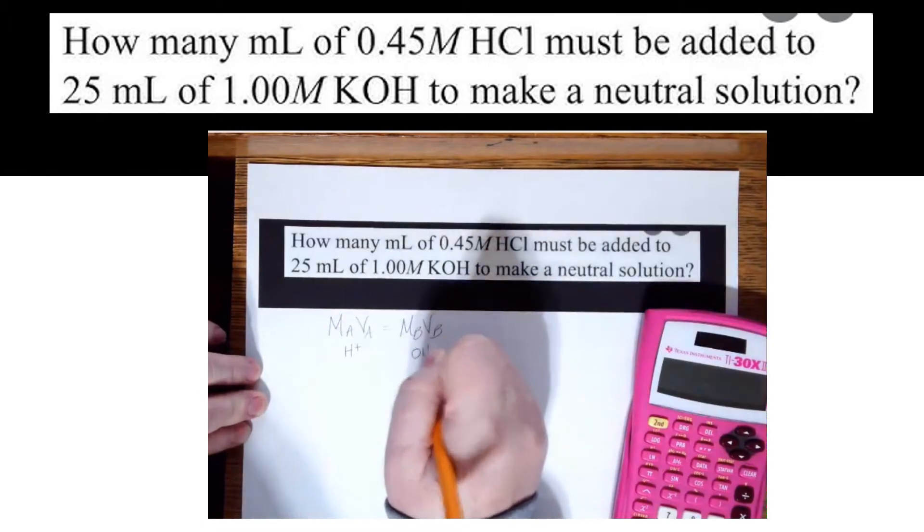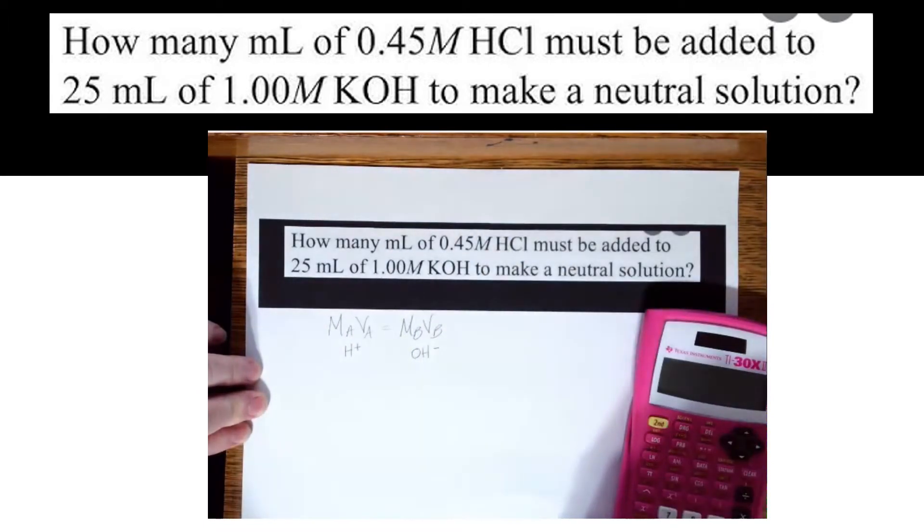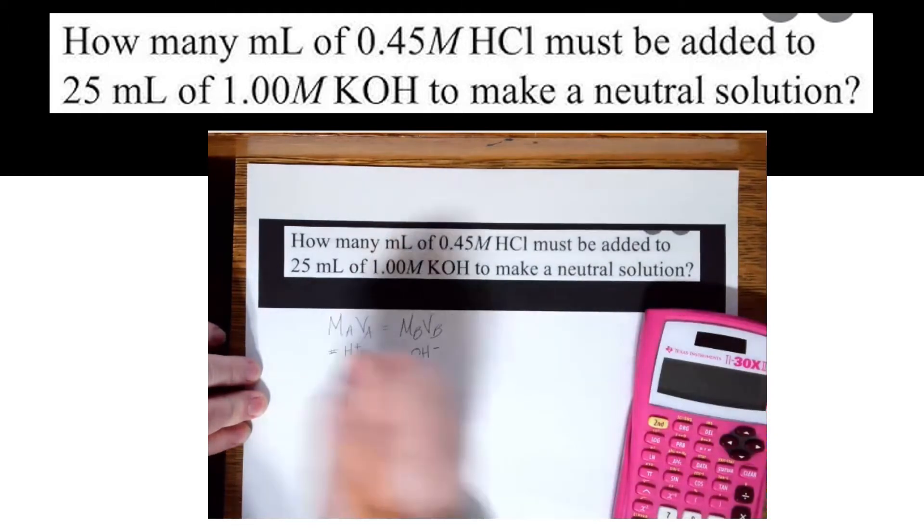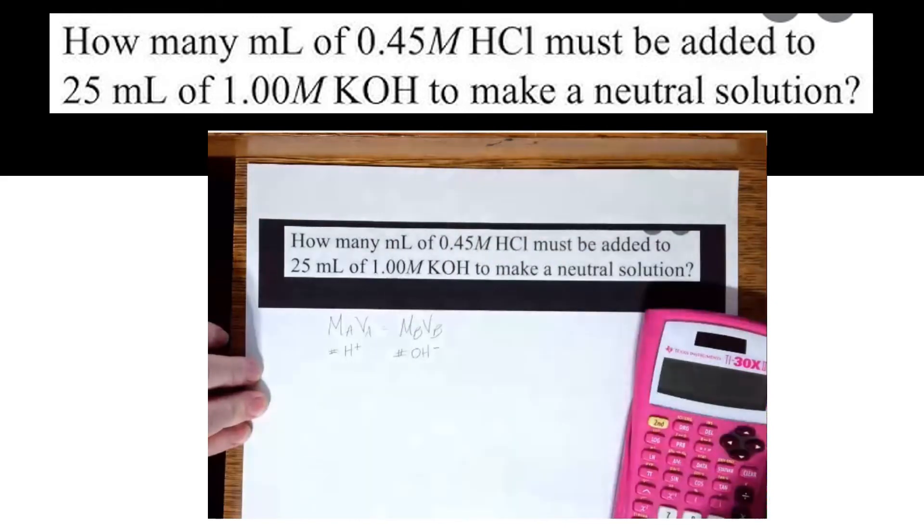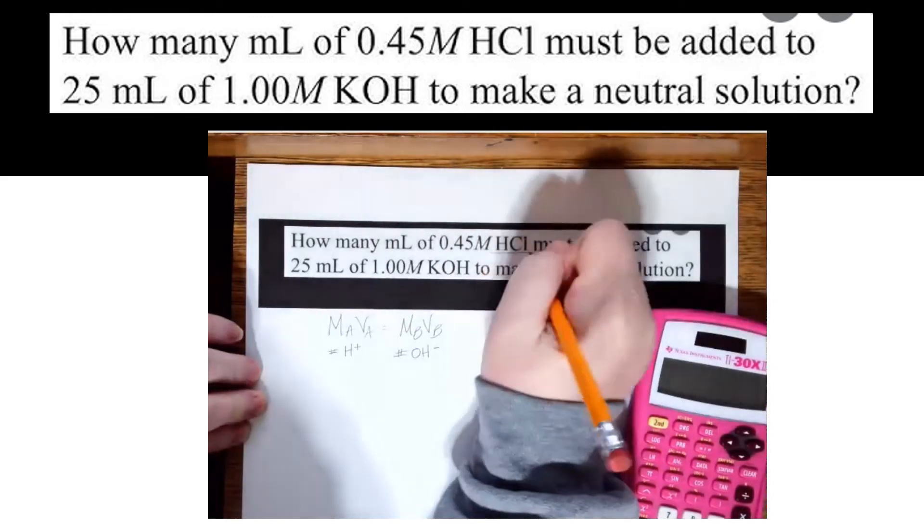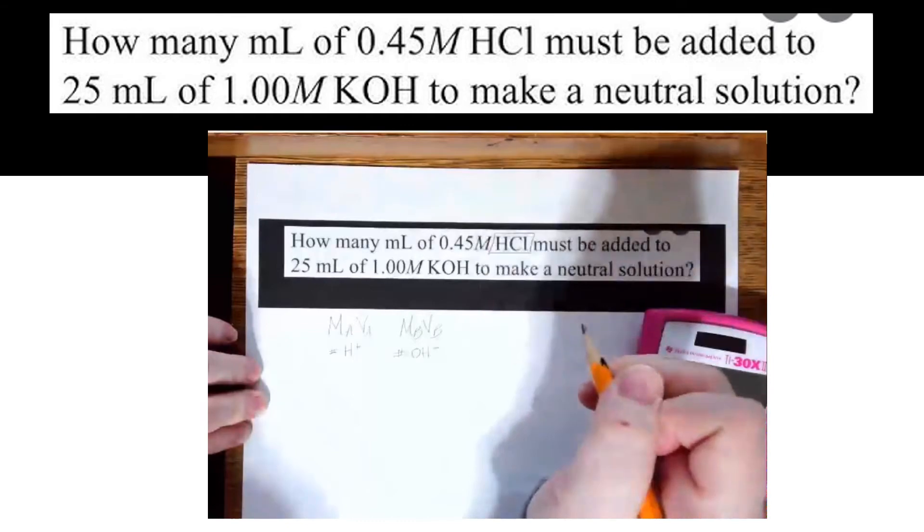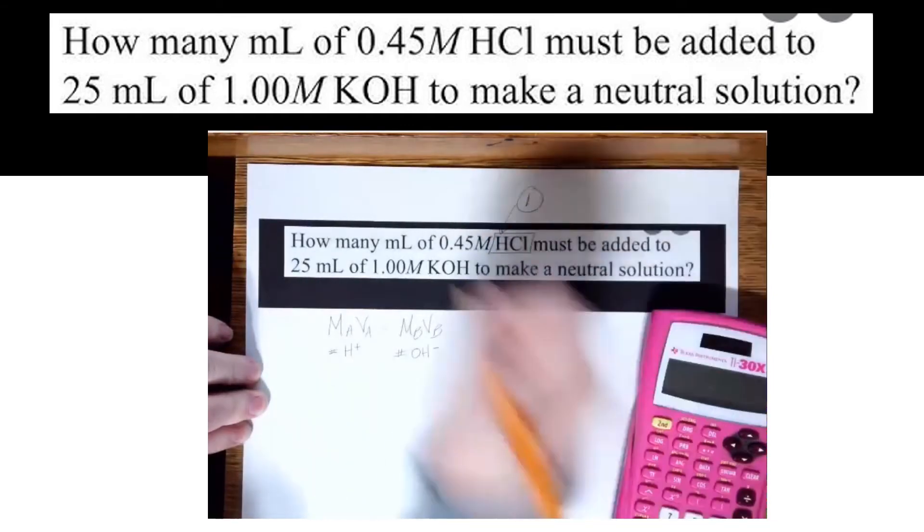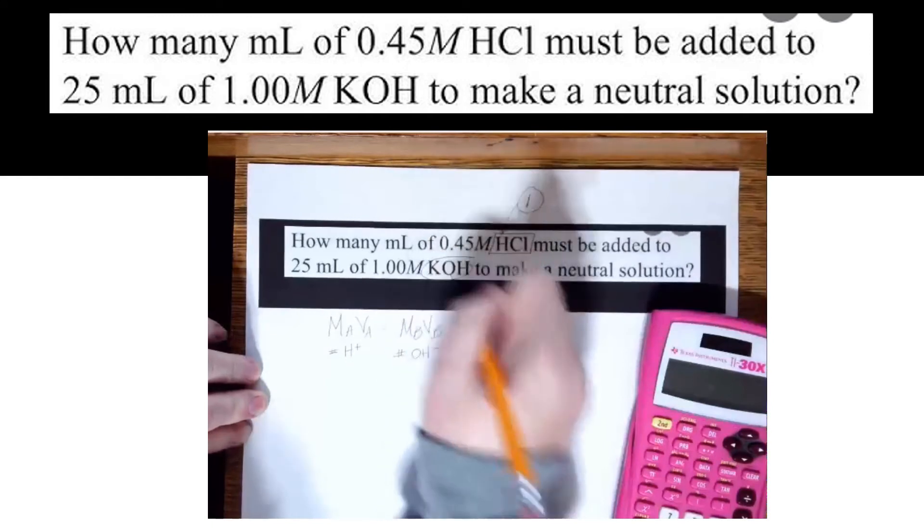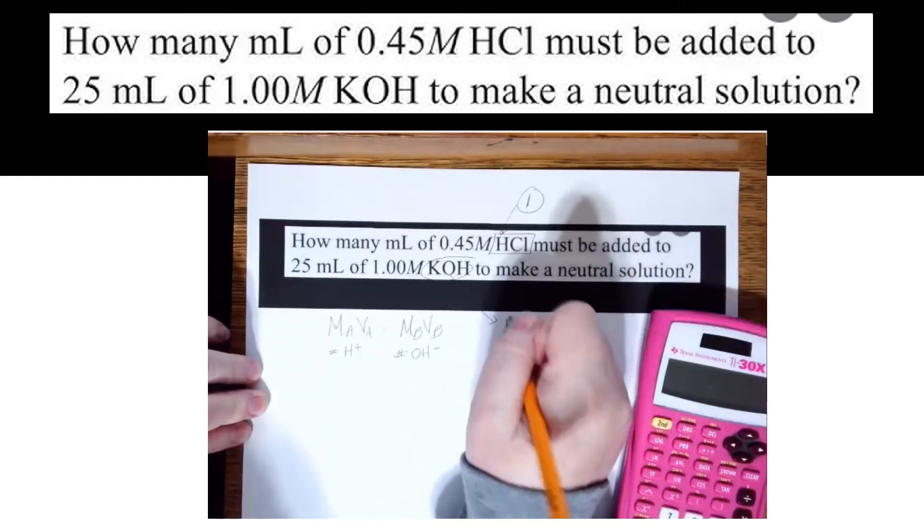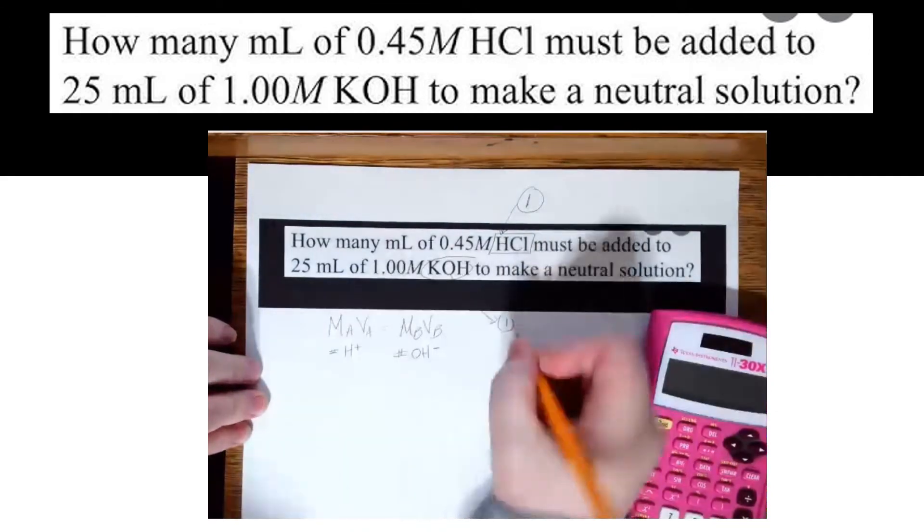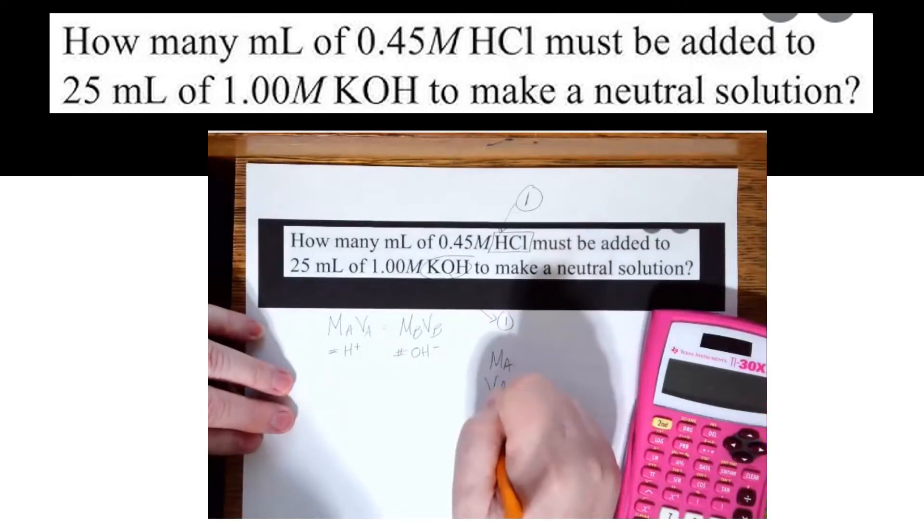So what I should remember is MAVA equals MBVB. That's given to me on the reference table. What you need to remember is acid has to deal with H+ because we're neutralization. Bases are OH-. So the number of OH's and the number of H's matters. So let's look at our formulas. How many H+ are in this formula? One. How many OH's are in this formula? One. That's easy. I can just plug it in like this.